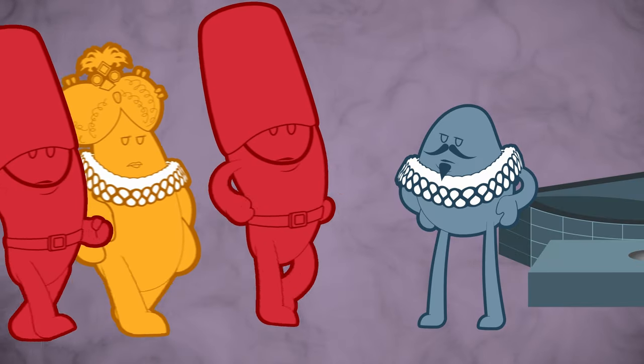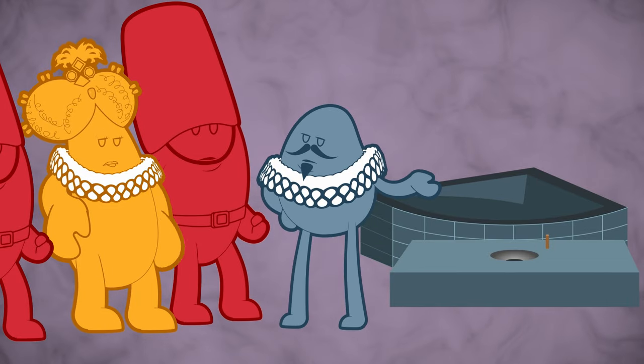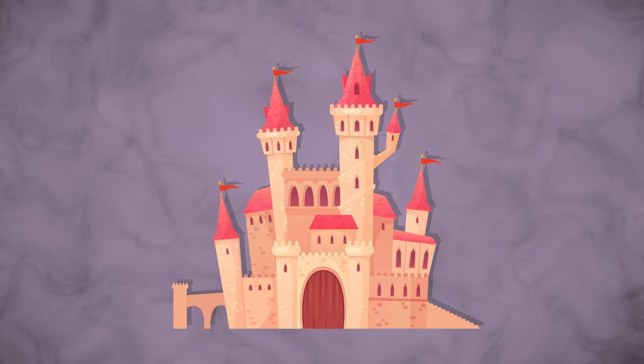Harrington invited the Queen over to his house to show off his fancy new invention. And she was impressed. So impressed, in fact, that she had an Ajax installed in one of her castles.